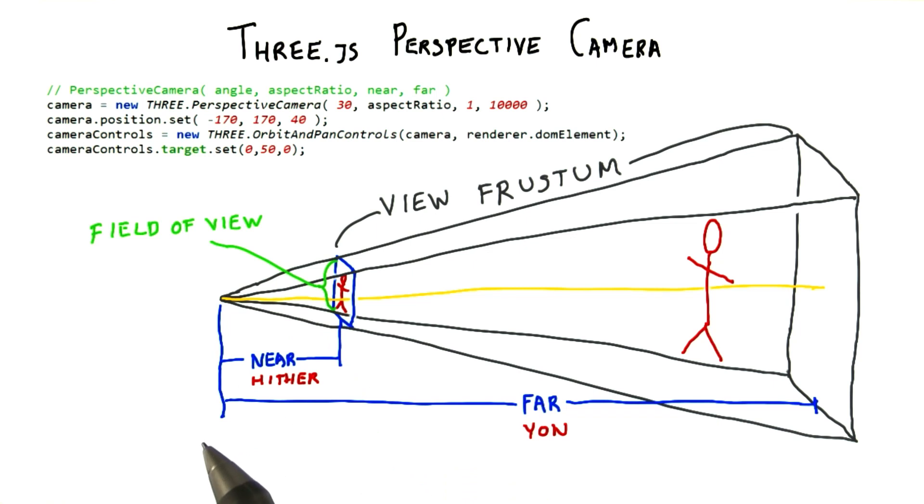This is Three.js's way of doing things, and 99% of the time, it's what you want. That said, it's entirely possible to specify each side of the pyramid, and WebGL itself has a frustum call that does just this.